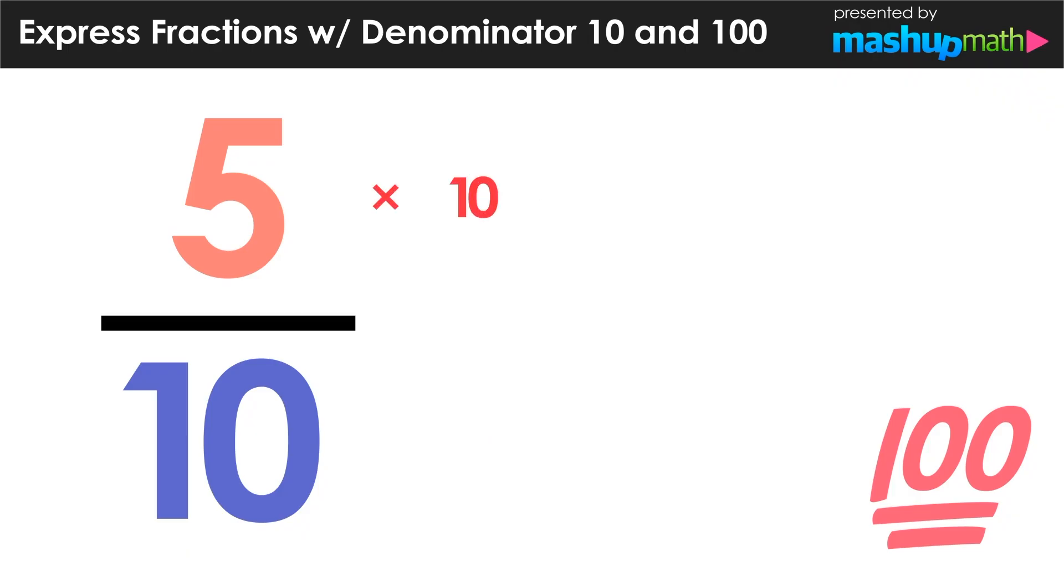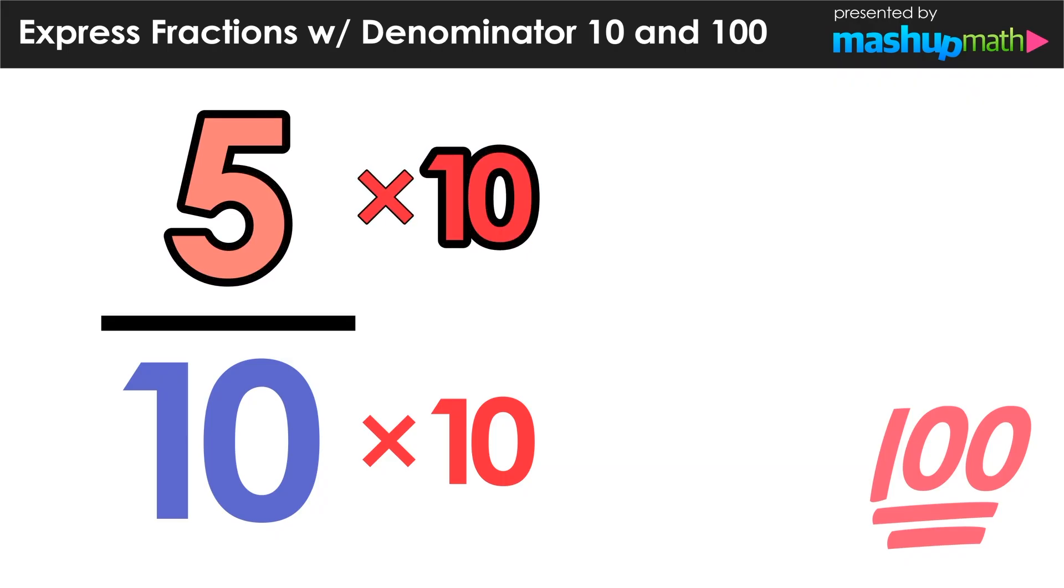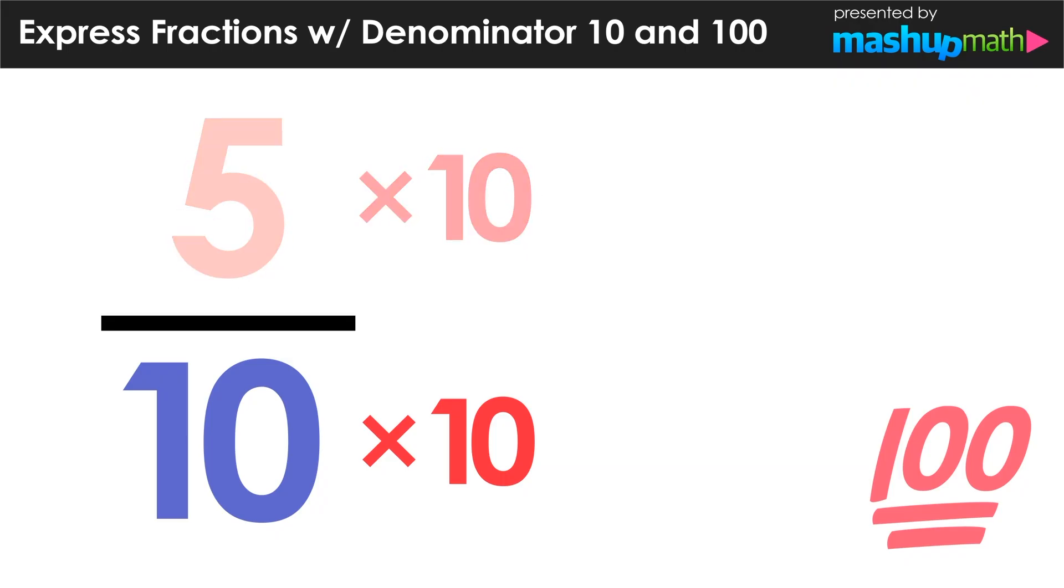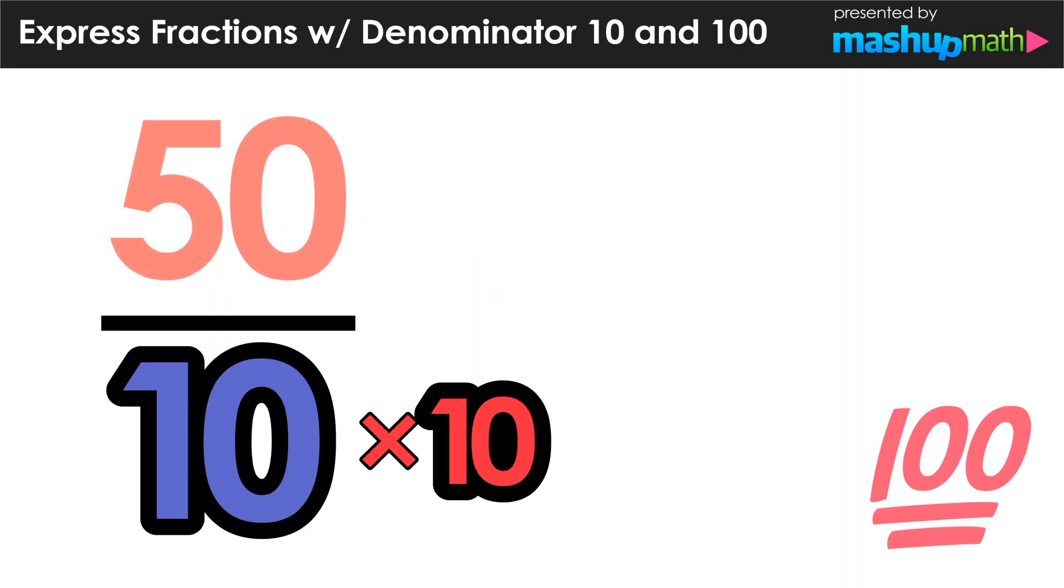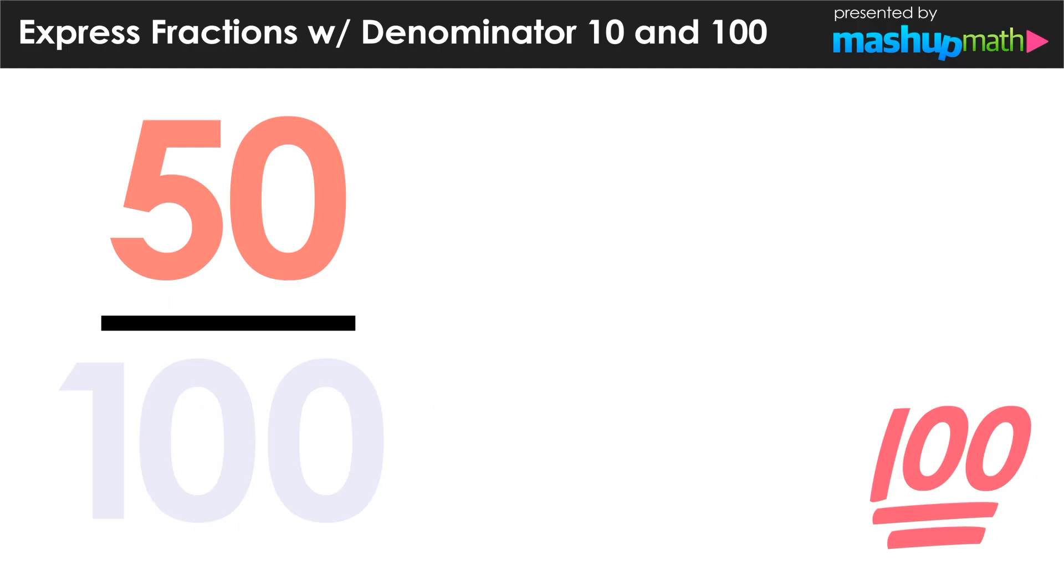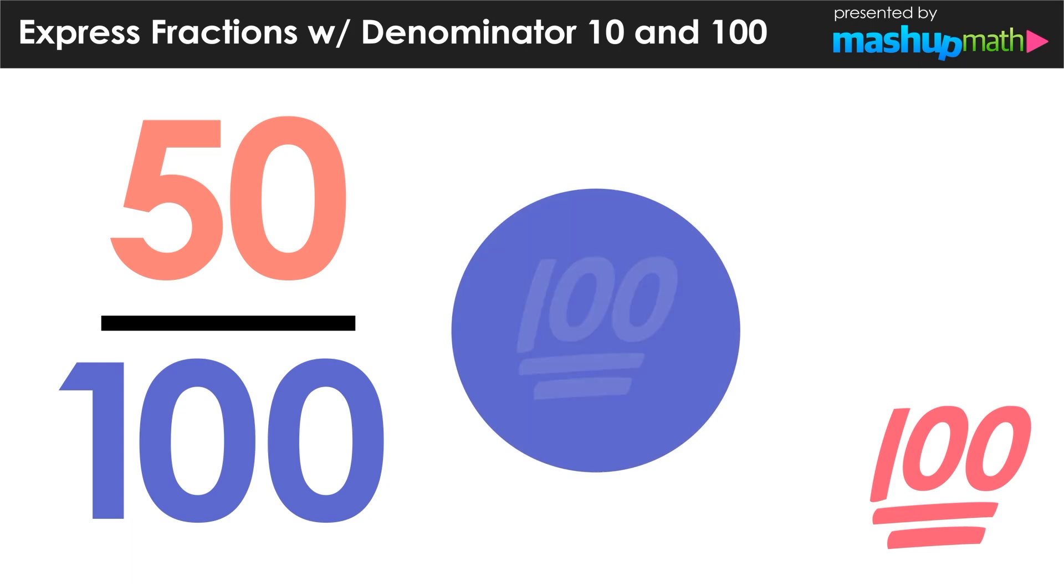But what if we took this fraction 5 over 10 and multiplied the numerator and denominator by 10? The numerator 5 times 10 would become 50, and the denominator 10 times 10 would become 100. Now let's go ahead and visualize this new fraction the same way as we did with the last one. In this case, the whole is 100, and the part of 50 is the same thing as 1 half of the whole.